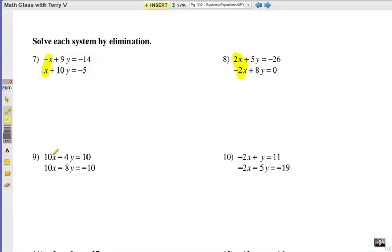Down here we have 10X and 10X, those are exactly the same same sign, so we're actually going to end up subtracting. Here the X's are exactly the same again, negative 2X and negative 2X, so we're going to subtract. In all four of these examples we're going to be eliminating the X first, but sometimes you'll be eliminating the Y's. These are all going to be either addition or subtraction.